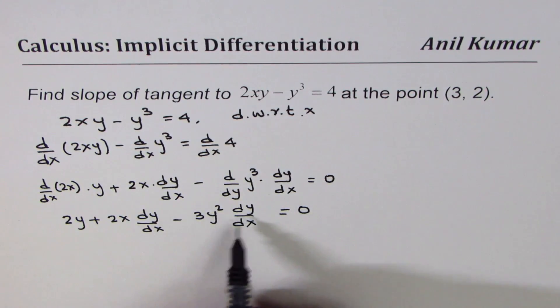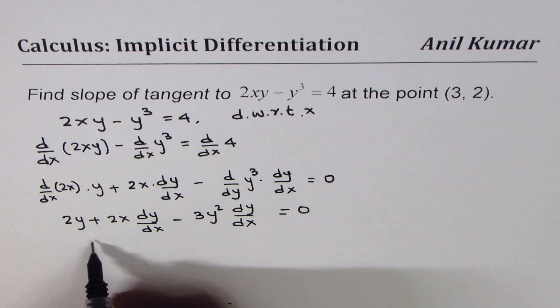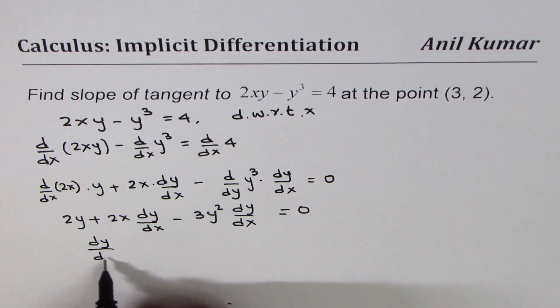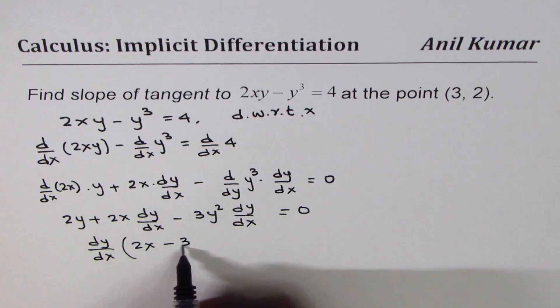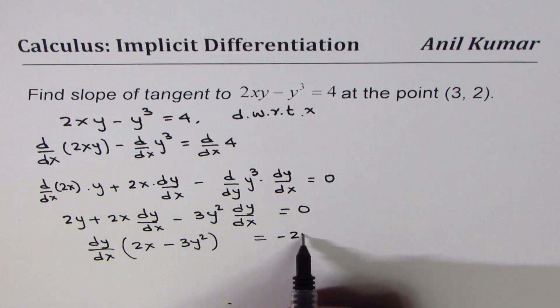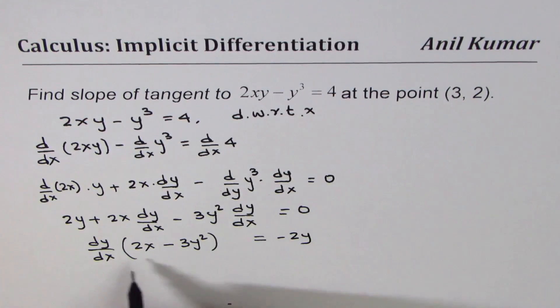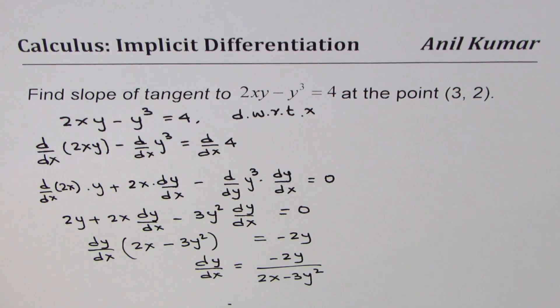Now you can take dy/dx common and take 2y to the other side. So we can write this as dy/dx times (2x - 3y²) and we will take 2y to the right side as minus 2y. Dividing by this factor we get dy/dx equals minus 2y divided by (2x - 3y²). So that is the derivative.